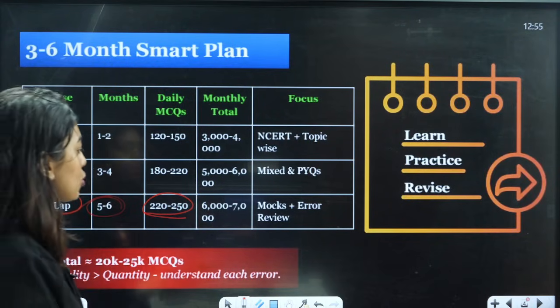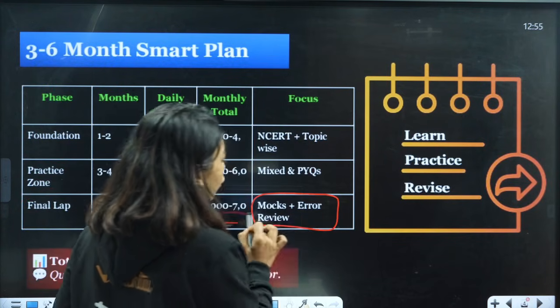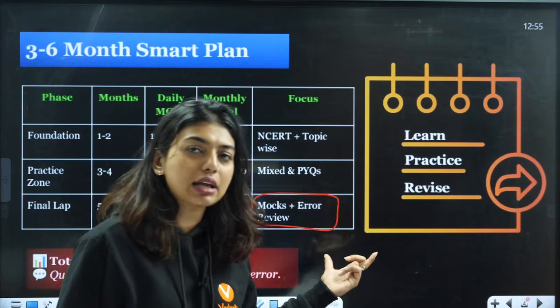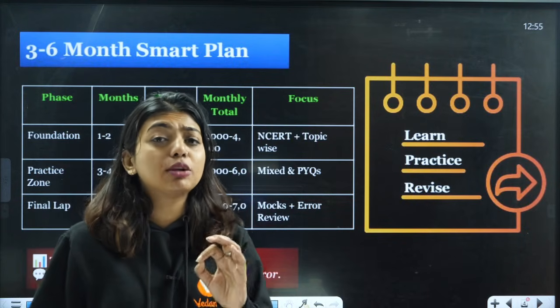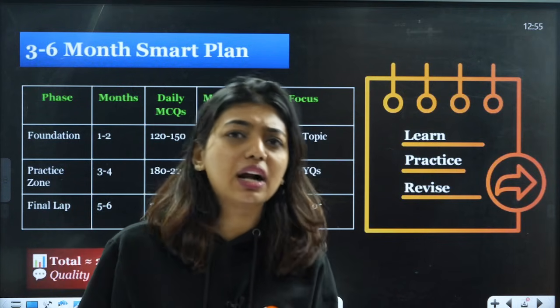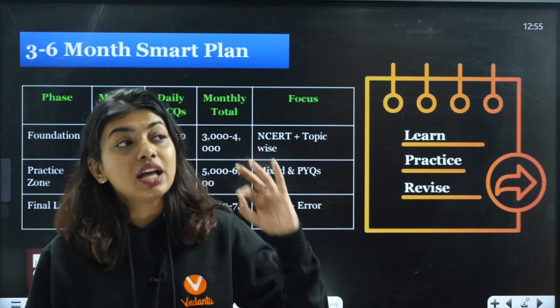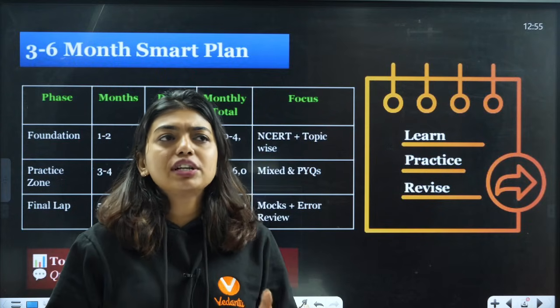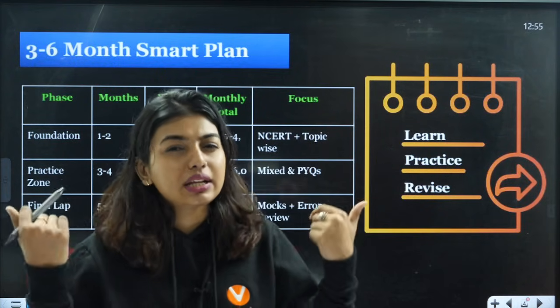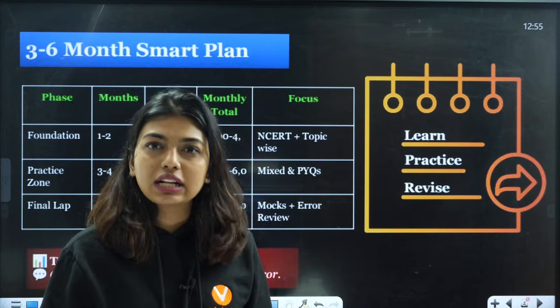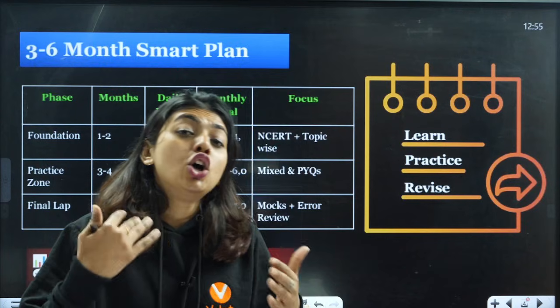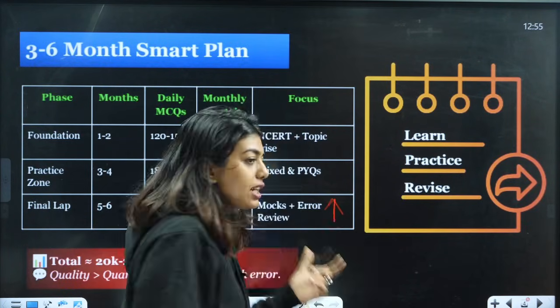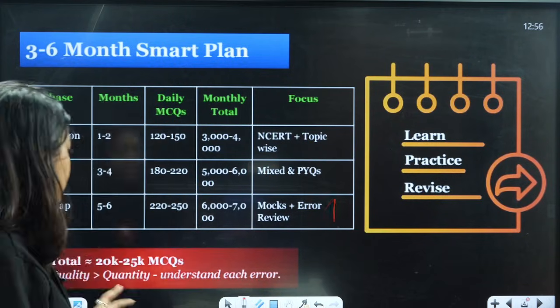In the final lap, that is in the month of March and April, he used to do up to 250 questions per day, almost 6,000 to 7,000 questions monthly. He used to do full tests and mock review. That is when we understood the mock review helped, and we understood that his error book had very few conceptual errors. So that gave him the confidence that he knows the concepts well. If conceptual errors are in high percentage, then this question should never come in your head.